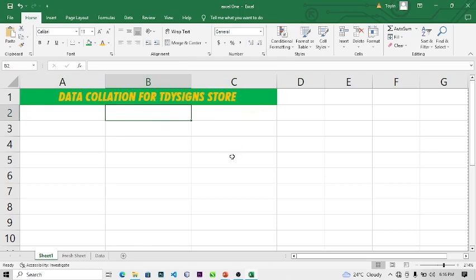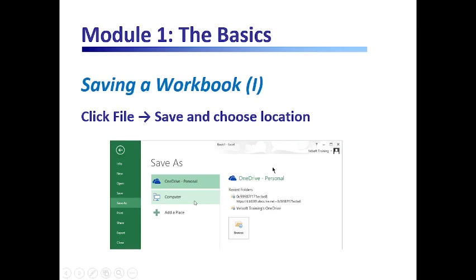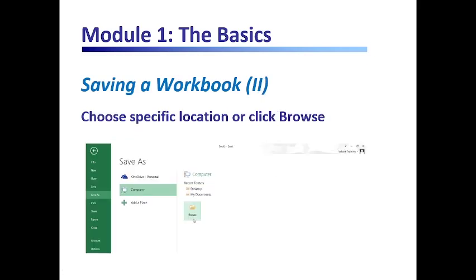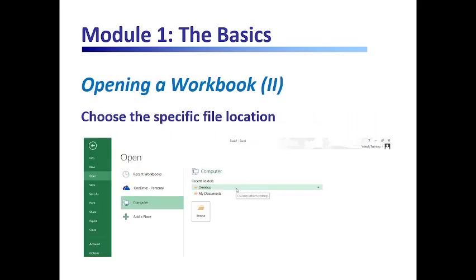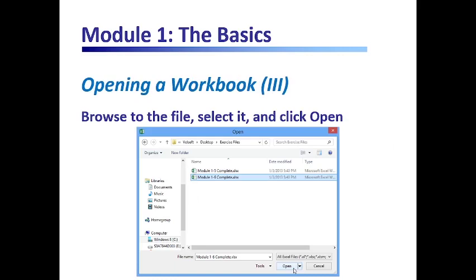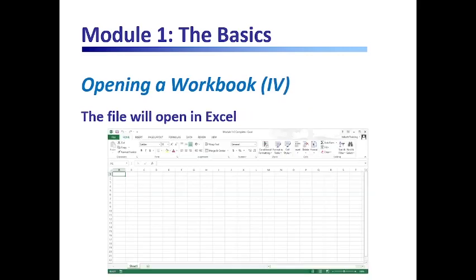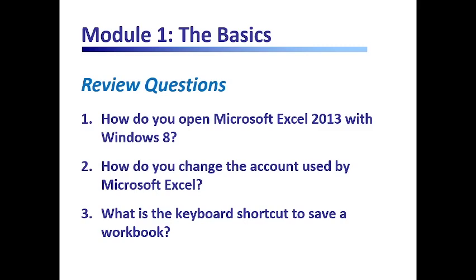Going back to our slide, we've learned how to save our workbook and choose a location. You can choose a specific location or click Browse. In the Save As dialog, navigate to where you want to save the file, enter the name, and click Save — which is what we've done.